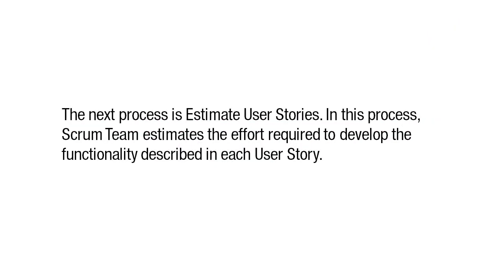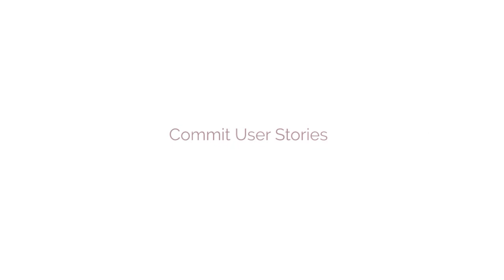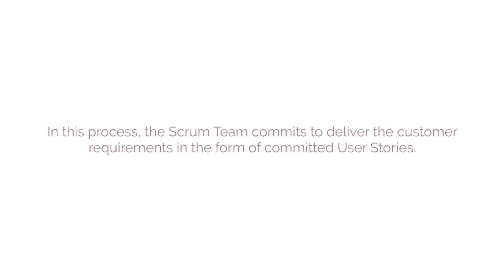The next process is estimate user stories. In this process, the Scrum team estimates the effort required to develop the functionality described in each user story. The next process is commit user stories. In this process, the Scrum team commits to deliver the customer requirements in the form of committed user stories.